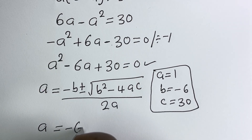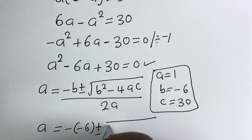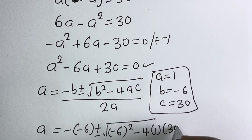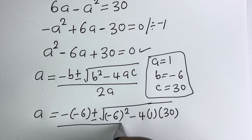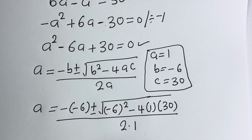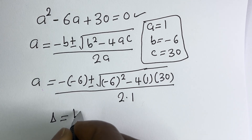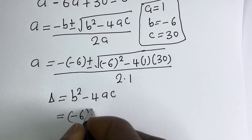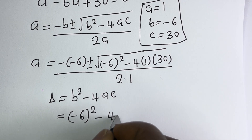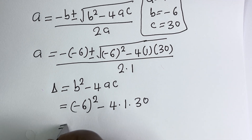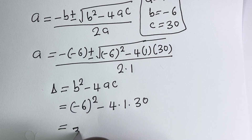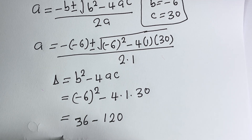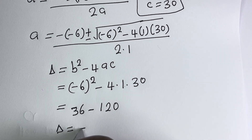A equals minus (minus 6) plus or minus square root of (minus 6) squared minus 4 times 1 times 30, all over 2 times 1. The discriminant D equals B squared minus 4AC, which is (minus 6) squared minus 4 times 1 times 30, that is 36 minus 120, giving D equal to minus 84.